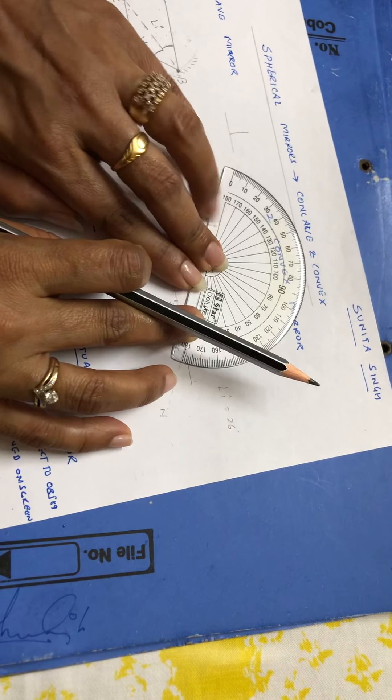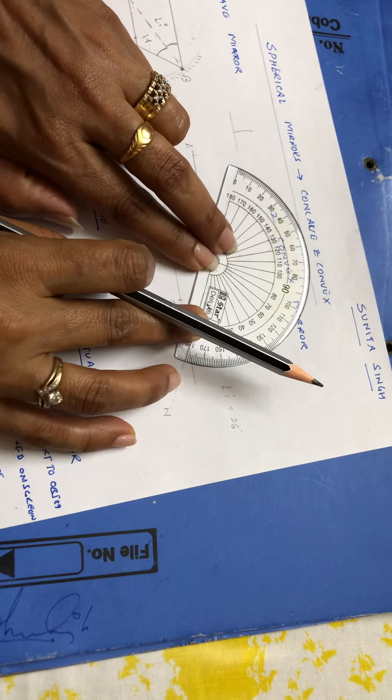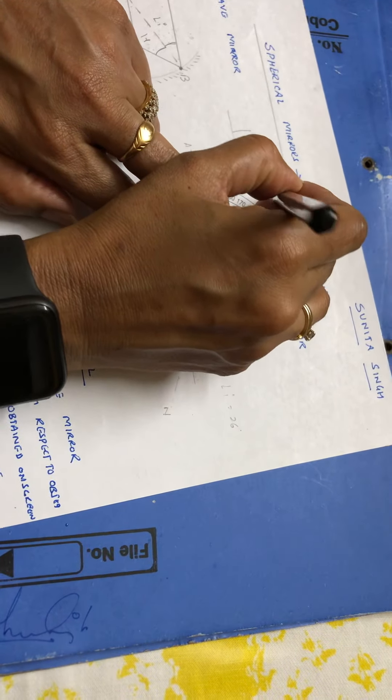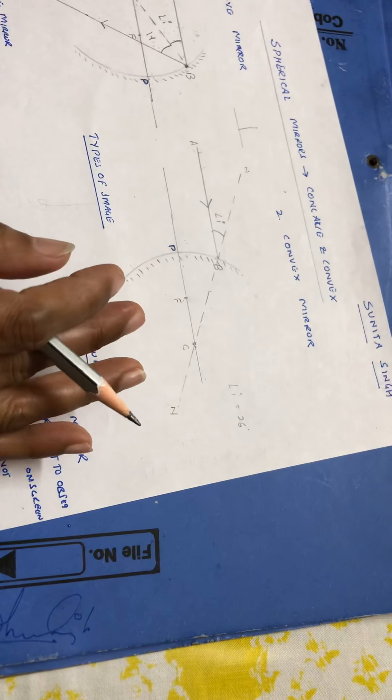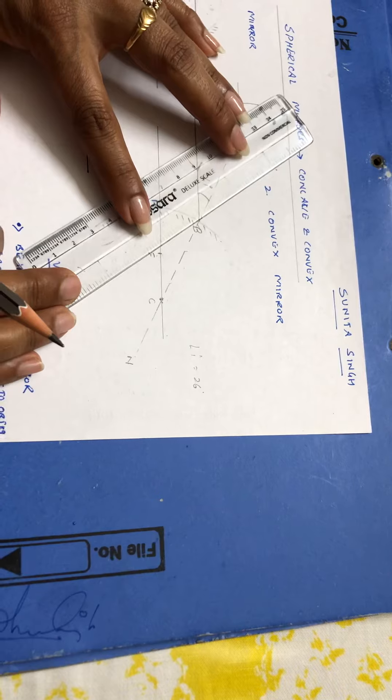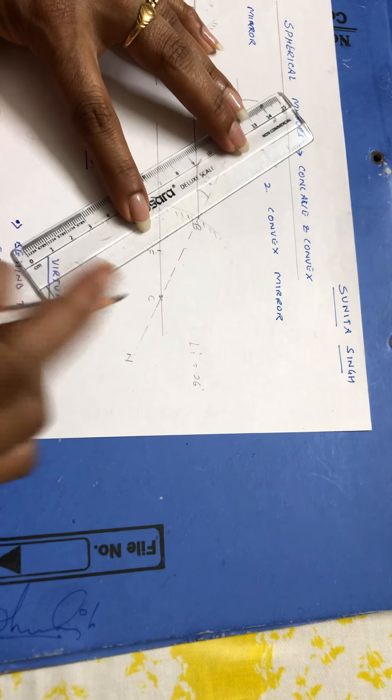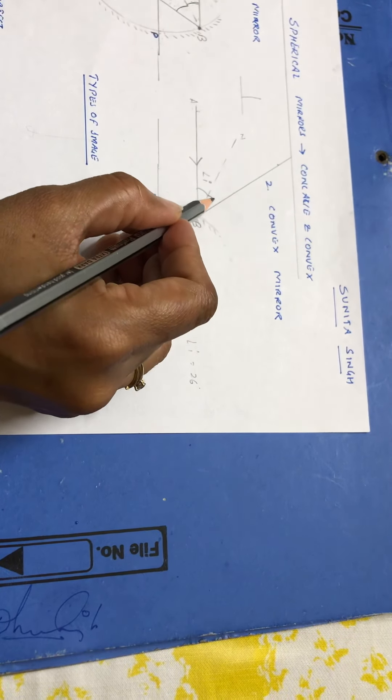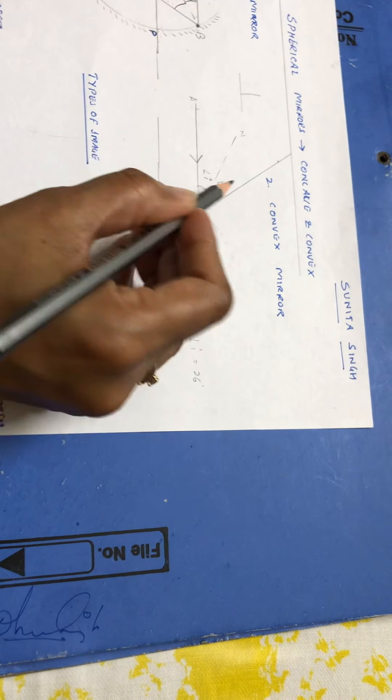And what was our angle? 26. So we will measure 26. 10, 20, 25, 26. I have made a mark. And now, when we join the point of incidence to this point, I am going to get my reflected ray. This is angle r. And this is my reflected ray.